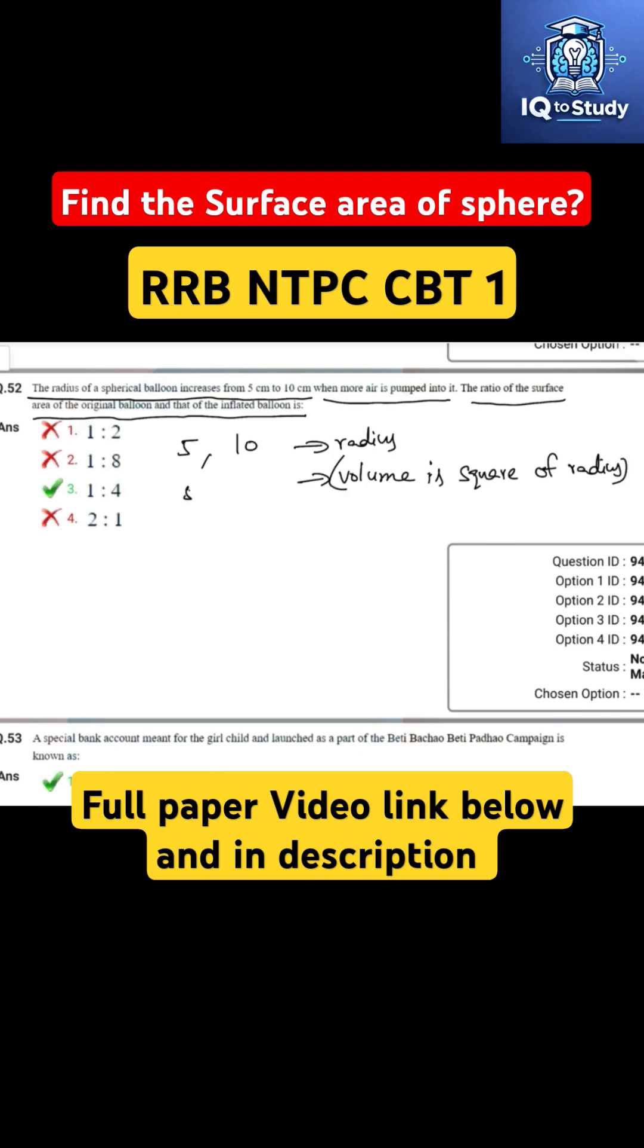It becomes 5 squared is to 10 squared, which means 25 is to 100, that implies 1 is to 4. Option 3 is correct.